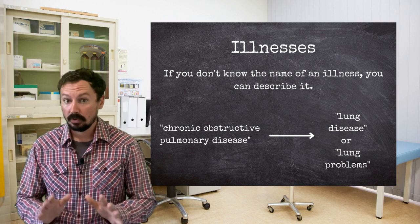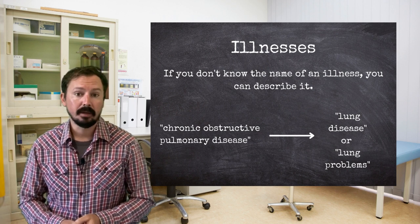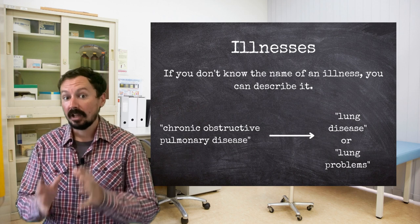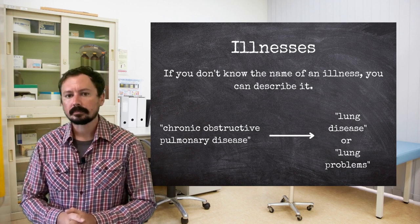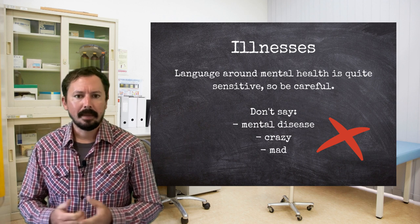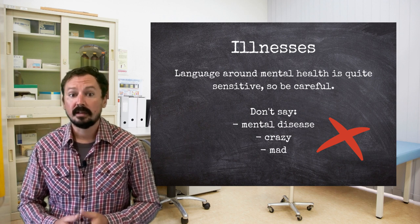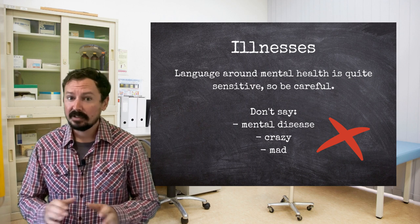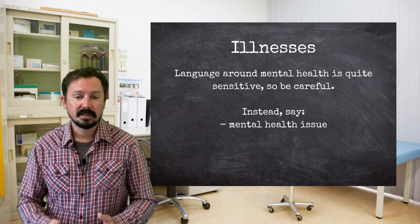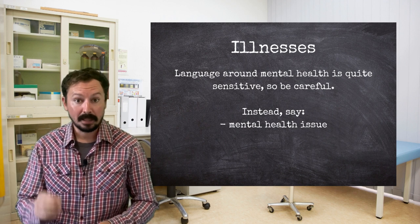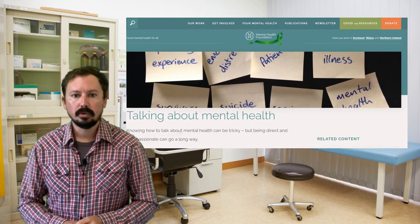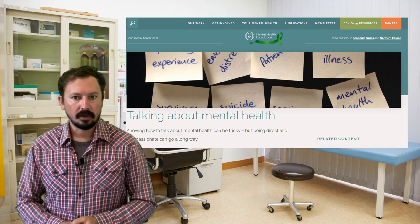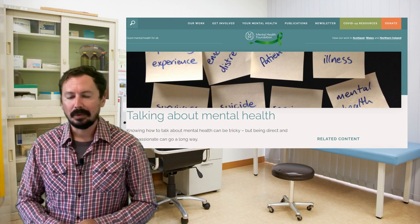If you don't know the exact name of an illness, don't worry. Instead of naming it, you can just describe it. Few people would know the term 'chronic obstructive pulmonary disease', but you could easily replace it with 'lung disease' or 'lung problems'. Finally, be careful when discussing mental health issues. The language surrounding this evolves quickly. It's best not to talk about 'mental disease' or to use old words like 'crazy' or 'mad' — these are considered quite offensive. If you know a specific condition, use the name. If you don't, you can say 'mental health issue'. According to the UK's Mental Health Foundation, we should also avoid saying 'mentally ill'. I'll post a link to their article on mental health terminology below, as it's quite useful.